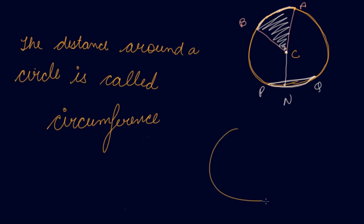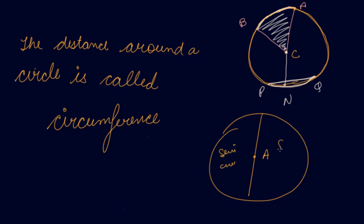Now, if I divide the circle with the diameter into two equal parts, then each part is a semi-circle. This is a semi-circle — you are dividing the circle into two equal halves.